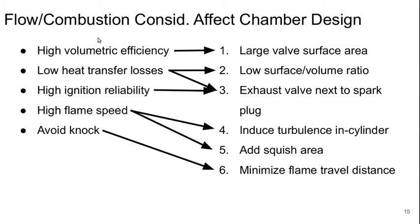We can get high volumetric efficiency by having a large valve surface area — in other words, making it easy for flow to get in and out of the cylinders. We can achieve low heat transfer loss by keeping a low surface-to-volume ratio, minimizing the surface area, as well as by putting the exhaust valve right next to the spark plug.